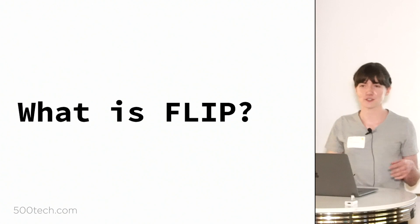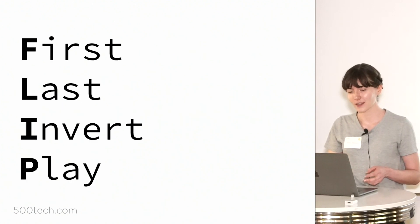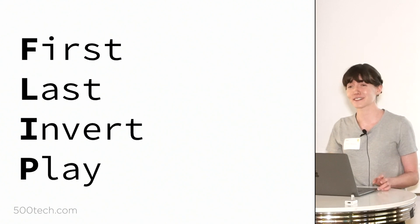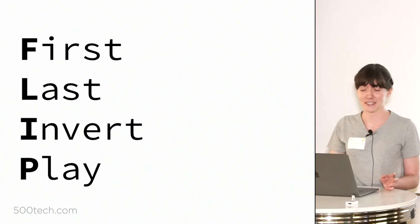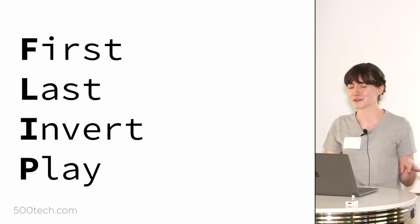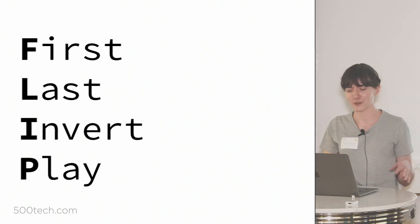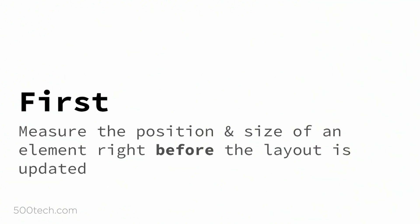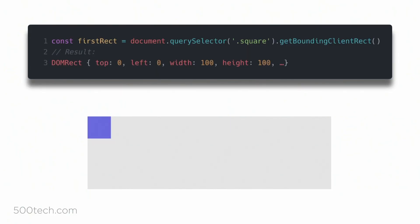Before we get any further, I'm going to show you how to implement FLIP from scratch. FLIP is an acronym that stands for First, Last, Invert, and Play. I think it was invented by Paul Lewis, or at least that's the first article I read about it. So the First part of FLIP: we have this element that we know is going to change and we want to animate that change. We know an update is imminent, and we cache information about the position of the element. We're going to call the getBoundingClientRect method on the square, and that gives us a nice DOMRect object that has top, left, width, and height.